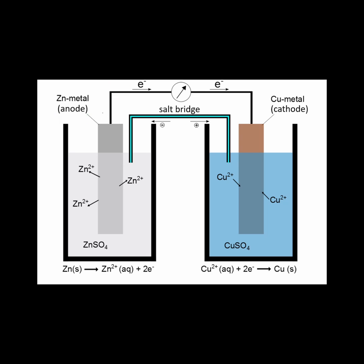Electrons will flow as a current from the zinc electrode to the copper electrode, and the current can be used to power a device.